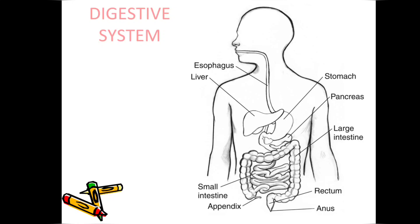Then through the food pipe or esophagus, food goes into the stomach. The stomach is like a muscular bag, and it contains hydrochloric acid which helps in digestion. In the stomach, protein food gets digested, and the undigested food goes into the small intestine. In the small intestine, digestion ends and digested food mixes with the blood.